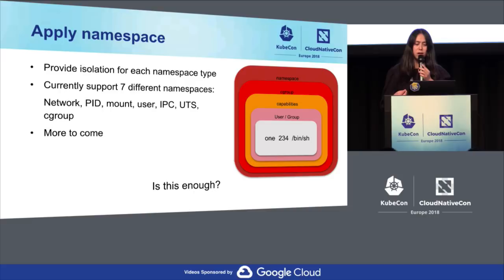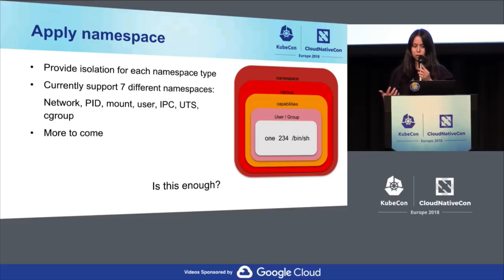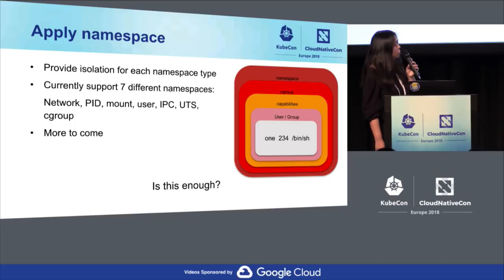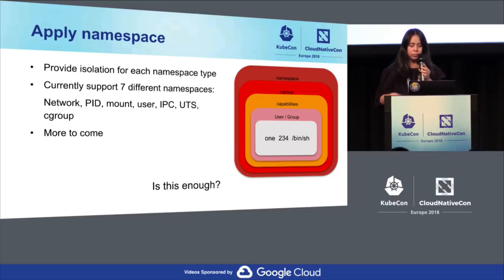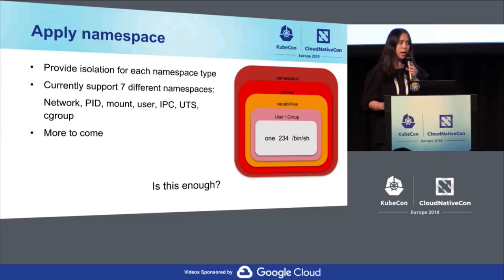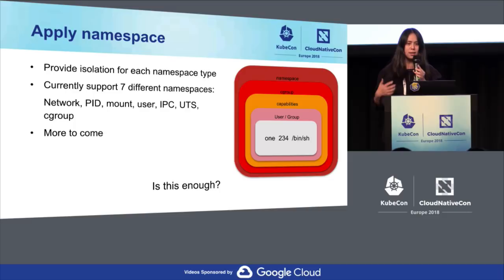We apply namespaces. We use namespaces to control what a container can see. Namespaces provide the fundamental isolation for containers, with isolation for different namespace types. Currently in the Linux kernel, there are seven different namespaces supported: network, PID, mount, user, IPC, UTS, and cgroup — and more are coming. So now we use namespaces to control what containers can see, cgroups to control what they can use, and running unprivileged to control what they can perform and execute.